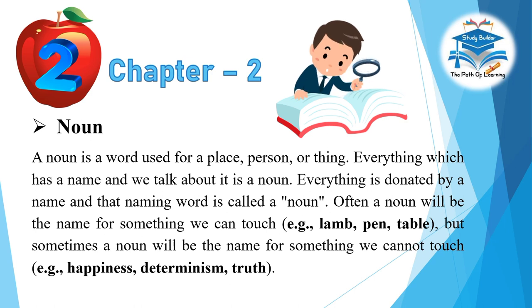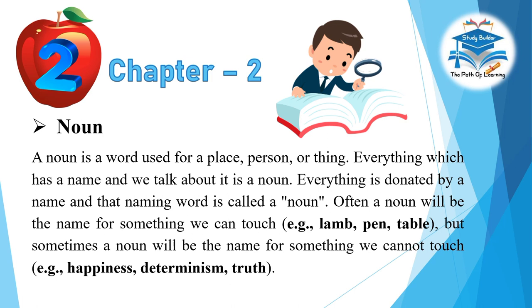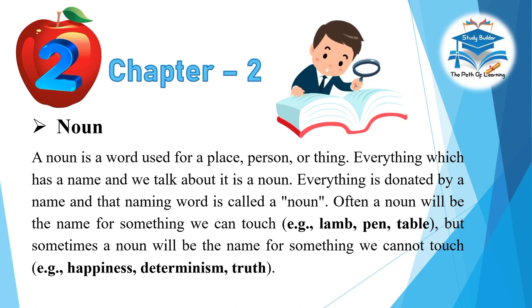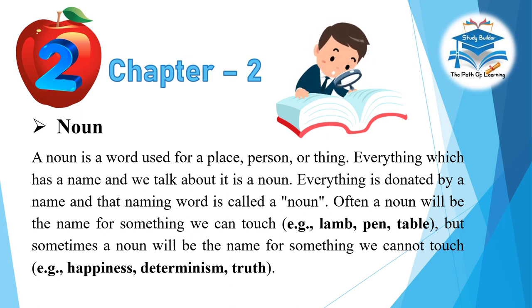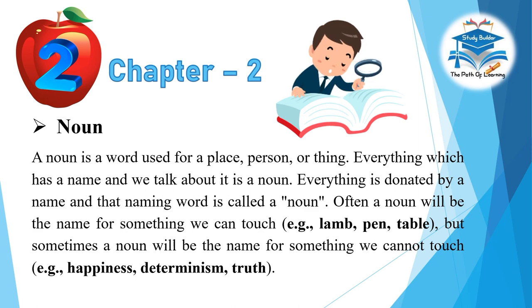Often a noun will be the name for something we can touch, for example: lamp, pen, table. But sometimes a noun will be the name for something we cannot touch, for example: happiness, determinism, truth.